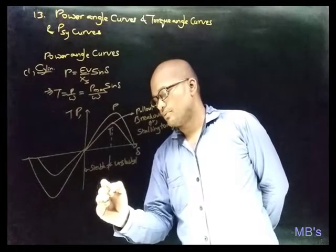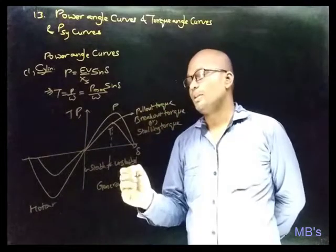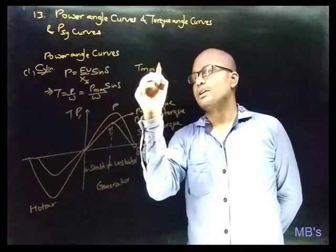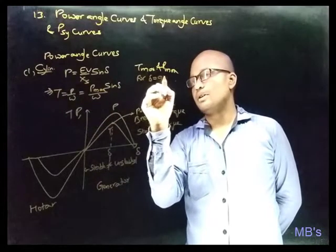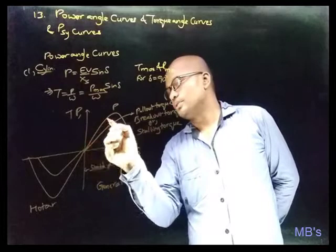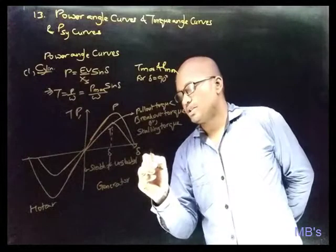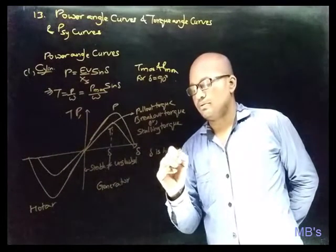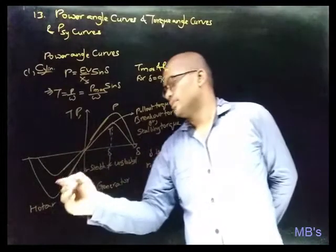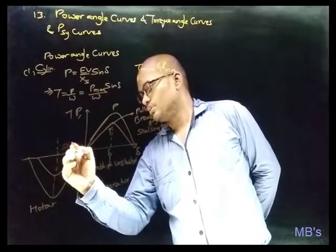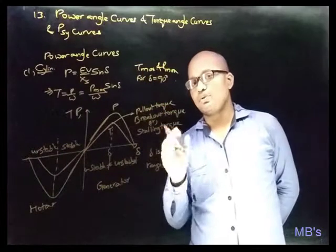This is the generator case, with the stable region up to 90 degrees and the unstable region beyond. The motor case is exactly opposite — the stable region and unstable region are reversed. For the motor, the stable region is at lower delta values and the unstable region is at higher delta values. Now moving to the salient pole type alternator power angle curves.